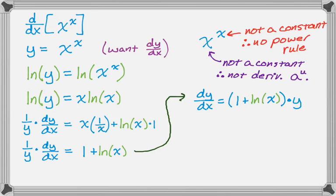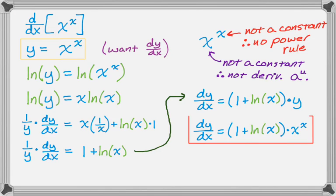But the issue is the original problem didn't have a y in it. We kind of introduced the y. So what I will notice is that y is actually equal to x to the x. So I'll just rewrite this, replacing that y with x to the x. And there you go. That's how you find that derivative.